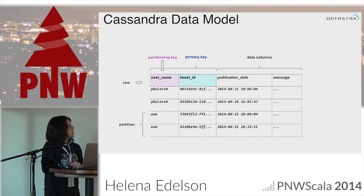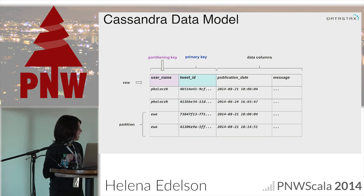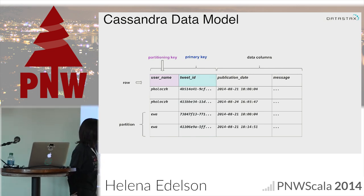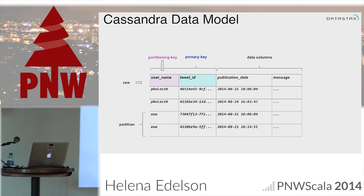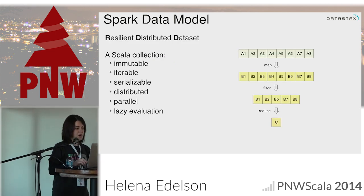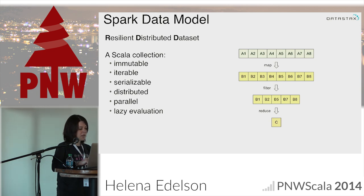Two quick slides. The Cassandra data model: you have your partition, partitioning keys, primary key, and all your columns. And with Spark, as Evan mentioned, it's the resilient distributed dataset — RDDs — which handle all the data sets. They're immutable, iterable, serializable, distributed, parallel, and execute in a lazy evaluation.